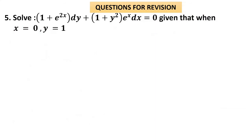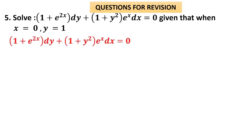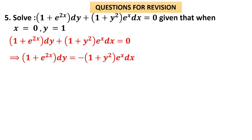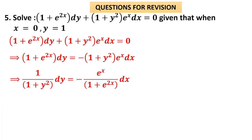Question number 5 is a particular solution problem. After finding the general solution with plus c, c is evaluated using given boundary values. The problem is: (1+e^{2x})dy + (1+y²)e^x dx = 0. Pushing the second term: (1+e^{2x})dy = −(1+y²)e^x dx. Separating variables: dy/(1+y²) = −e^x/(1+e^{2x}) dx.